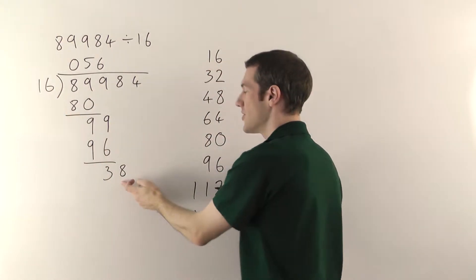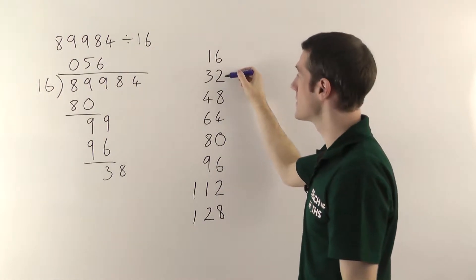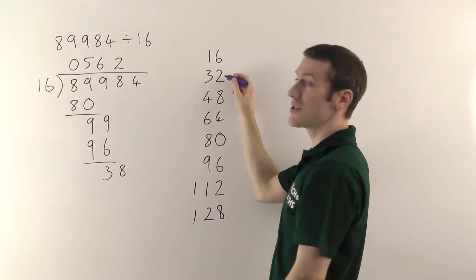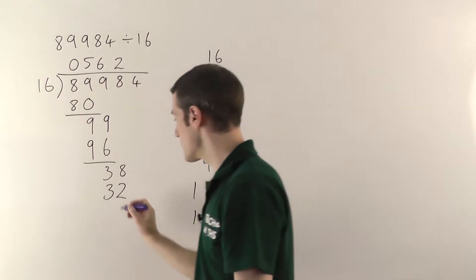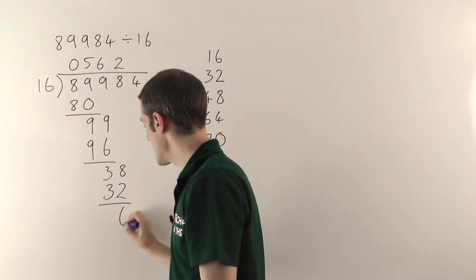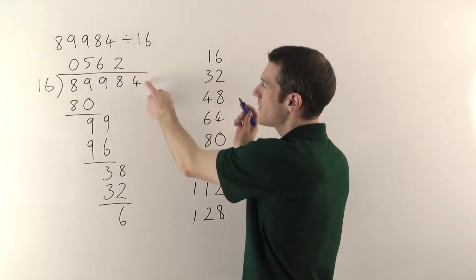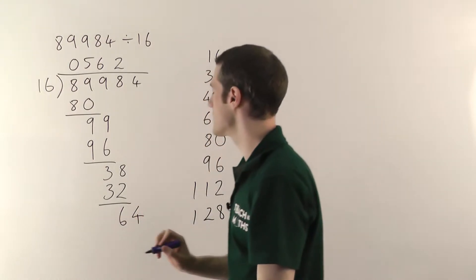How many sixteens in thirty-eight? It's only going to be two sixteens. So you write your two above your eight. Two sixteens make thirty-two, so you write thirty-two down there. Eight minus two is six. Three minus three is nothing.